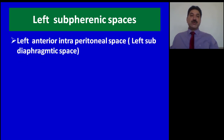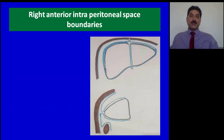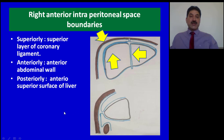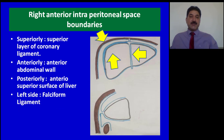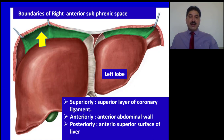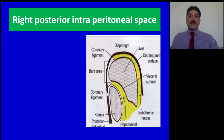Left subphrenic spaces are further divided into: left anterior intraperitoneal or left subdiaphragmatic space; left posterior intraperitoneal space or lesser sac; and left extraperitoneal space. The right anterior intraperitoneal space is bounded superiorly by the superior layer of the coronary ligament, anteriorly by the anterior abdominal wall, and posteriorly by the anterior inferior surface of the liver. It is separated from the left subdiaphragmatic space by the falciform ligament.